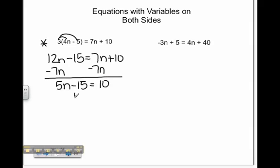Now we just have a two-step equation. We'll add 15 on both sides of the equal sign, leaving us with 5n equals 25. We have a one-step equation that we can divide both sides by 5, giving us a solution of n equals 5.